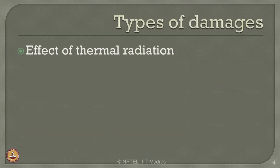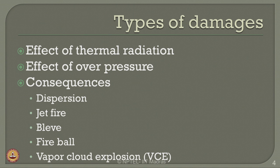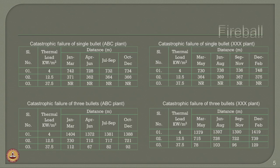There are different types of damages: the effect of thermal radiation, effect of overpressure, and the consequences derived from these could be dispersion, jet fire, BLEVE, fireball, and VCE. In the last lecture, we discussed the consequences of dispersion and jet fire on both plants located at ABC and XXX locations respectively. Now we will continue to discuss the consequences of the fireball on both plants.